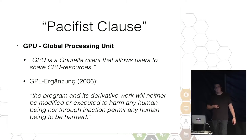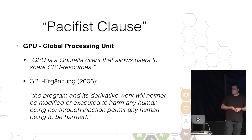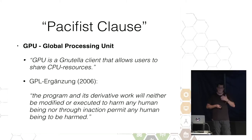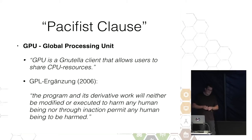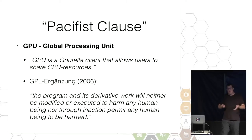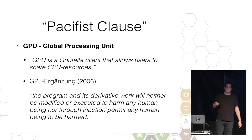Everyone has thought about that kind of responsibility — this is about ethics and philosophy apart from licensing. There's one group of developers who thought about it in 2006 and later called it the pacifist clause. The project is called GPU — the Global Processing Unit — a Nutella client allowing users to share CPU resources. They extended the GPL with: 'The program and its derivative work will neither be modified nor executed to harm any human being, nor through inaction permit any human being to be harmed.' A reference to Asimov's Three Laws of Robotics — trying to ensure the code could not be used by the military, though they had no way to control or enforce that.